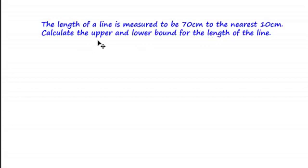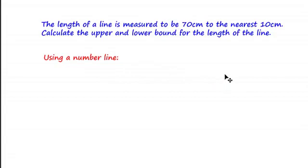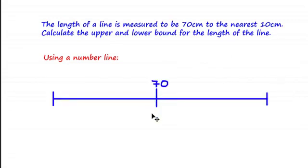To calculate the upper and lower bound, we're going to figure out these sets of possible values using a number line, then use them to choose what the upper and lower bound would be. You start by drawing a number line where you always put the estimated value right in the middle. In this case the estimated value is 70 centimetres, so we put it in the middle.